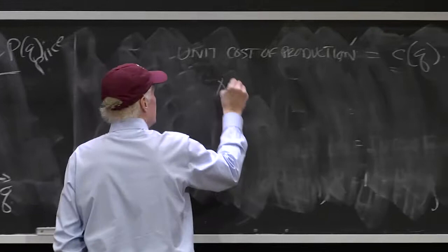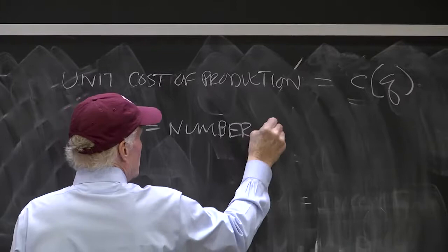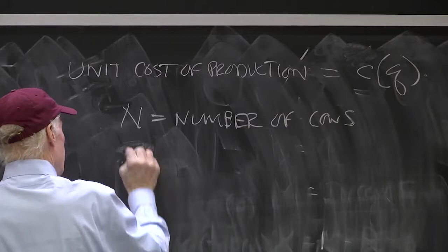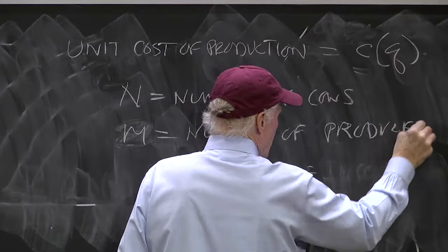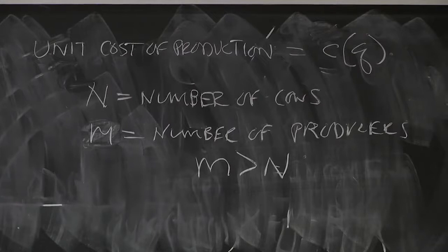So let's let N equals the number of consumers, M equals the number of producers. And I'm going to assume M is bigger than N, just to make my life easy. I'm going to assume that there are more producers than there are consumers.